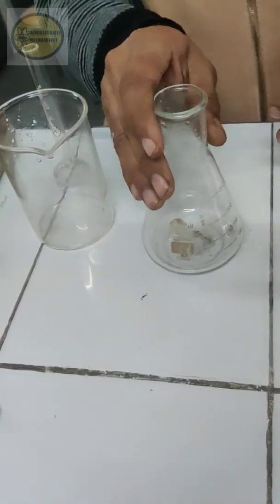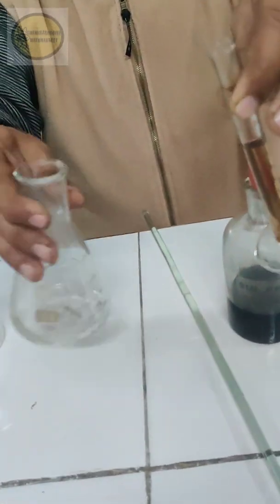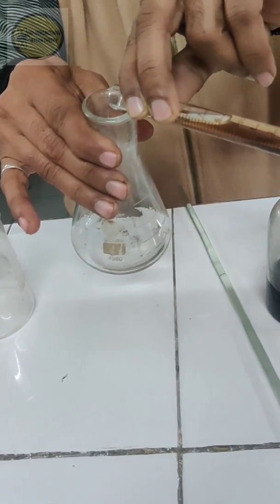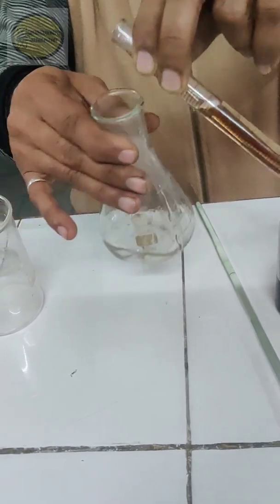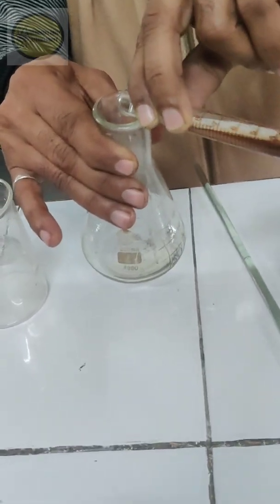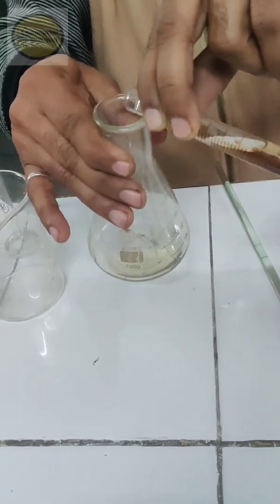Now what we are going to do is we will add about 7.5 ml of concentrated sulfuric acid in small installments to this solution with constant shaking. And this is a kind of exothermic reaction, so you will feel that the mixture becomes warm.